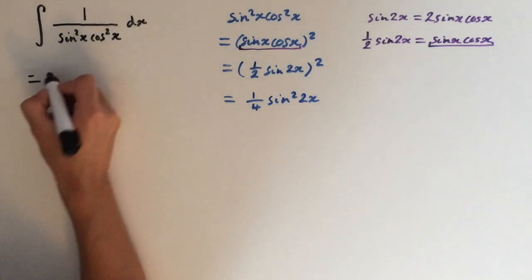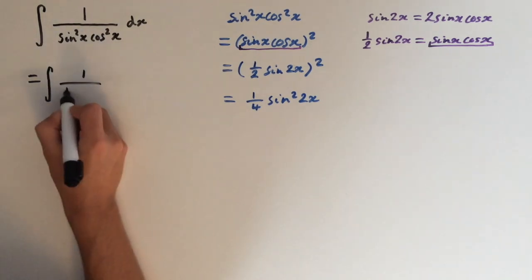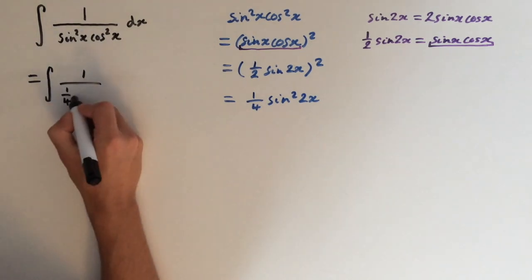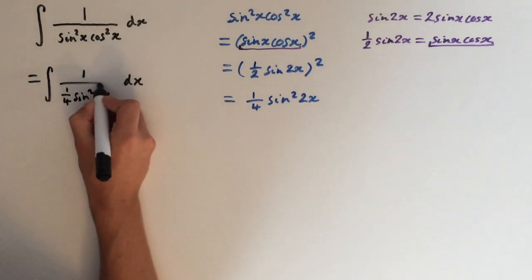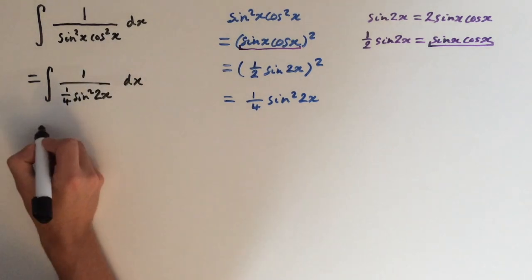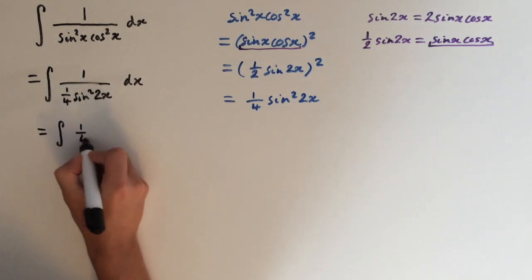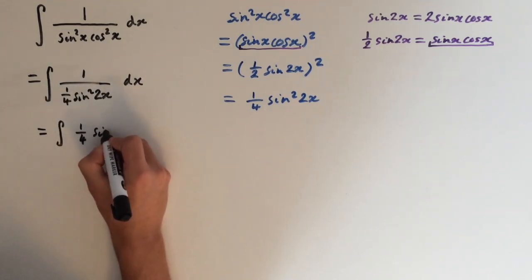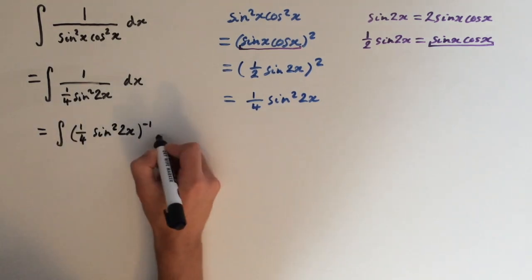So this is going to look like integral of 1 over 1 quarter times sine squared of 2x dx. So because it's 1 over, it's essentially the denominator to the power of minus 1. So we get a quarter times sine squared of 2x all to the power of minus 1 dx.